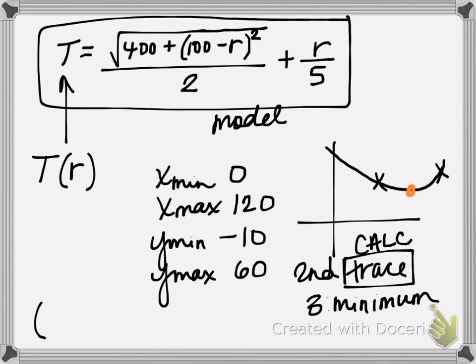The coordinate that I'm getting for my minimum rounded to two decimal places is (91.27, 29.17). The calculator returns this as x and y, but you need to label it according to the variables in your model. So we were putting in an R value and getting out a time.